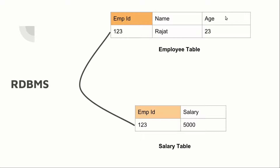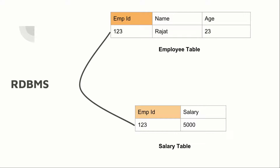RDBMS is a pretty rigid system. If you want to store one more column about an employee, you have to create a new column in the table, and when you do that you also have to ensure you don't break your application. If the application is expecting only three columns and you provide four, there has to be a mechanism to handle that scenario. So RDBMS systems are very rigid when it comes to the structure of the data.